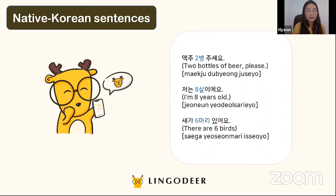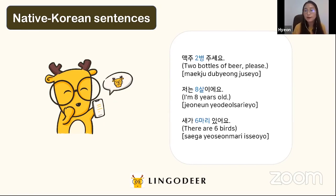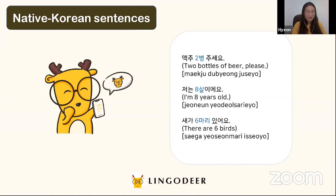Next sentence: 저는 여덟 살이에요 — I am eight years old. Since we're talking about age, we use Native Korean number 여덟 here.